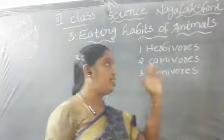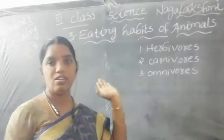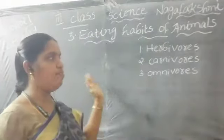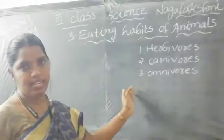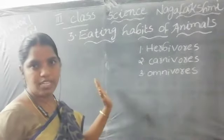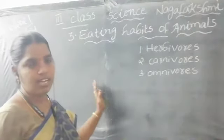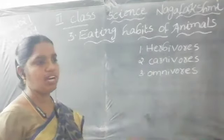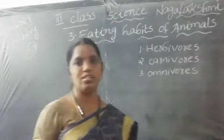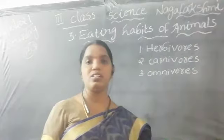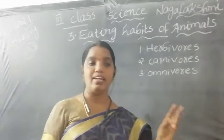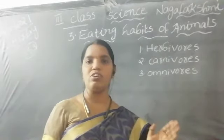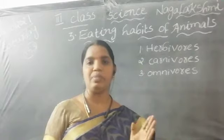In each question there are four options — A, B, C, D. Out of these four options, you tick the correct one. What is the meaning of herbivorous? Herbivorous means plant-eating animals. Only those animals that eat plants.